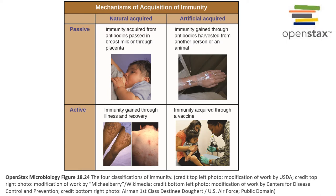Vaccination is the main form of artificially acquired active immunity. A vaccine can be a weakened or attenuated form of a pathogen, an inactivated form of the pathogen, or just a part of the pathogen — a subunit such as a protein or RNA from that pathogen can function as a vaccine.